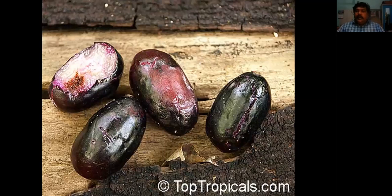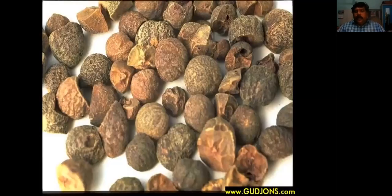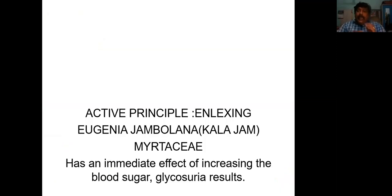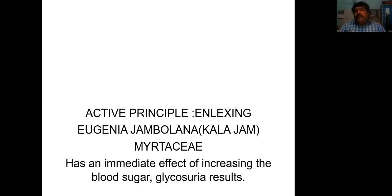This is actually the fruit. Basically the seeds of the plant are used for preparing medicine. The active principle of this one is basically jamboline. The common name of this one is Eugenia Jambolana, or Kala Jam, belonging to the family Myrtaceae. Whenever you hear of Syzygium, think of diabetes mellitus — don't forget that.